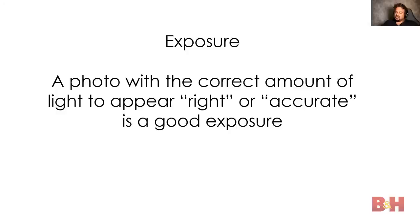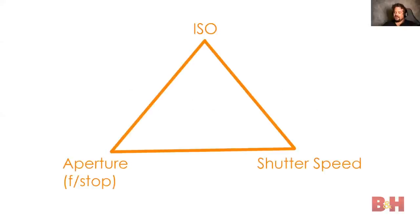Back to exposure: a photo with the correct amount of light to appear right or accurate. Photography is subjective — the correct exposure isn't necessarily a clear thing; maybe you want the picture bright or dark. Your camera's meter, if you use the in-camera meter, is going to average everything out to get a nice even middle tone. Back to the exposure triangle: ISO, aperture or f-stop, and shutter speed — those three things work together.